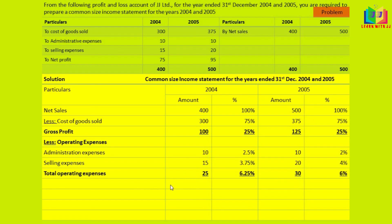Operating profit: 100 minus 25 is 75. Operating profit as a percentage of sales — 75 divided by 400 is 18.75%, and 95 divided by 500 is 19%.